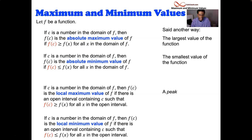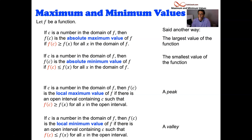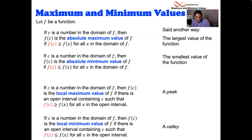Or locally, it's the smallest the function ever gets — that's a valley, that's what a local minimum value is. Mount Everest is the biggest peak in the world — the summit of Mount Everest is the absolute maximum value. But there are other high-altitude places where those peaks are local maximum values.